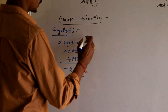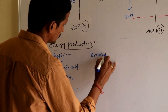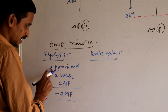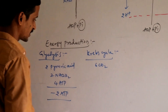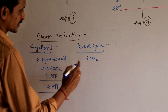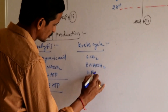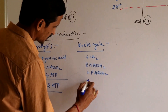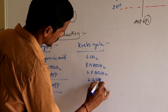After glycolysis we went into Krebs cycle. In Krebs cycle, pyruvic acid is completely converted into 6 carbon dioxide. Along with this, 8 NADH2 are produced, 2 FADH2 are produced, and 2 GTPs are produced.